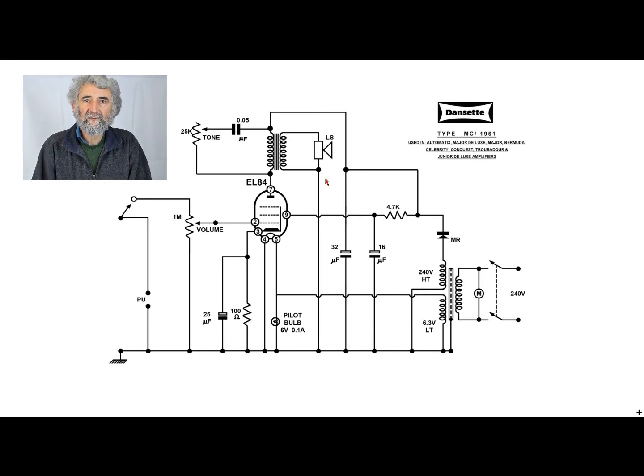Output transformer, speaker. They've earthed the secondary on one side. The tone control is in the form of a 0.05 microfarad, or 50 nanofarad, in series with a 25k pot. So if you turn that down there and short-circuit the resistor, you get a considerable amount of treble attenuation. If you turn it up to 25k...